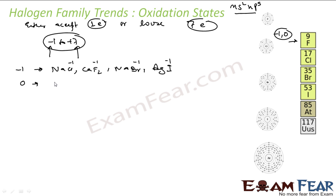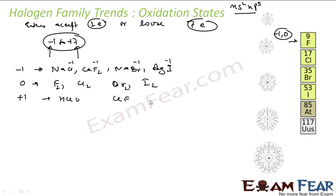For 0 oxidation state, we have fluorine gas, bromine gas, and iodine gas — in all these the oxidation state is 0. For plus 1 oxidation state, examples include HClO, ClF, and Cl2O. In ClF, fluorine has minus 1 and chlorine has plus 1. In HClO and Cl2O, chlorine also has plus 1 oxidation state.